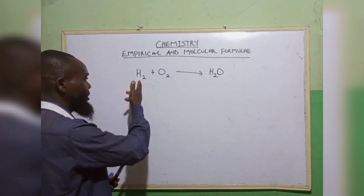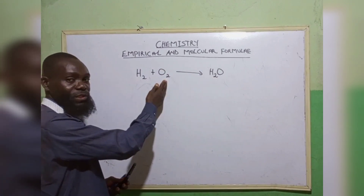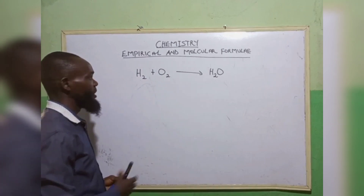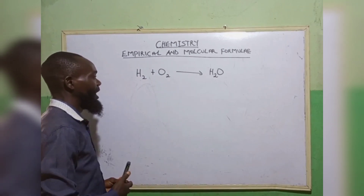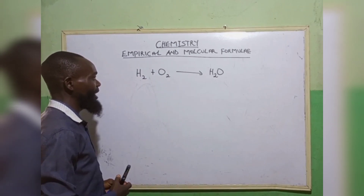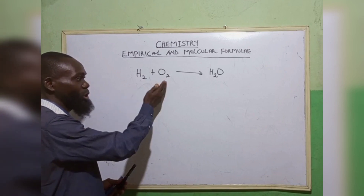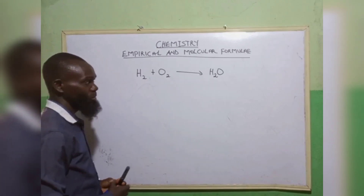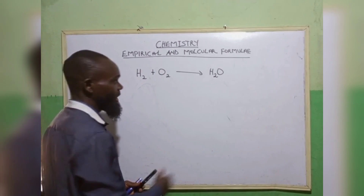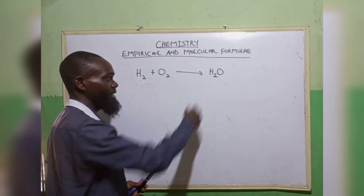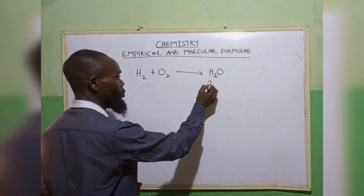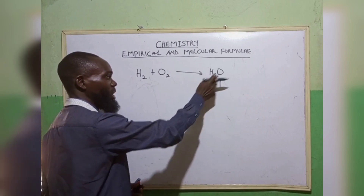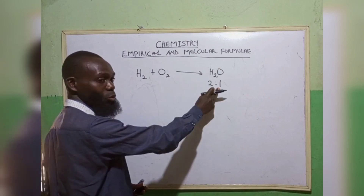When hydrogen reacts with oxygen, it gives H₂O. Here, the hydrogen molecule is reacting with the oxygen molecule to give the water molecule. The ratio of hydrogen to oxygen here is 2 to 1 — hydrogen here is 2, oxygen here is 1.